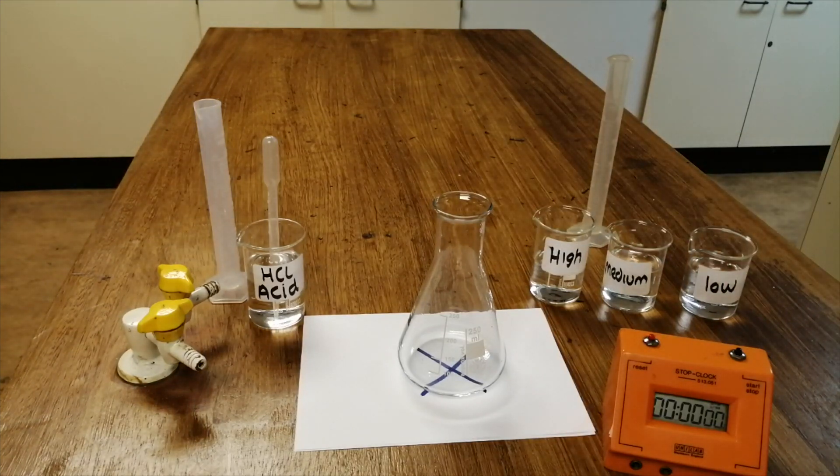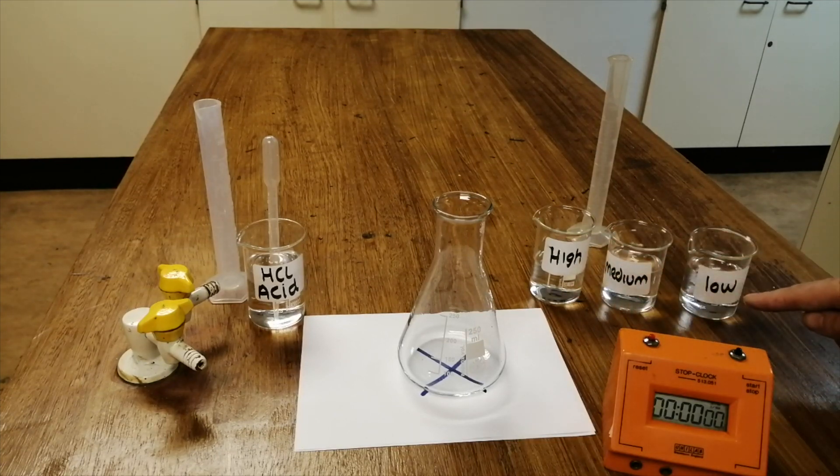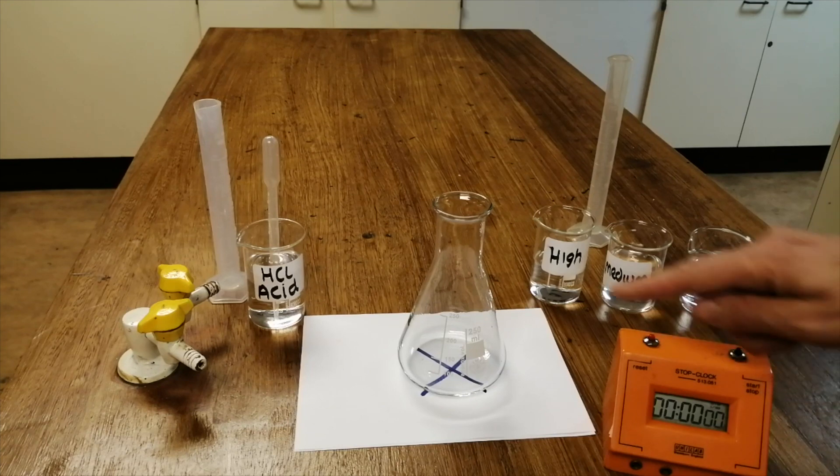And I'm going to change the concentration of the sodium thiosulfate each time. I will use the high, then the medium and then the low concentration and see if there's any difference in the time taken for the mixture to turn too cloudy to see the cross.